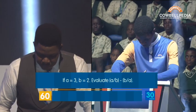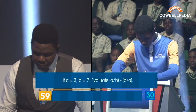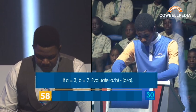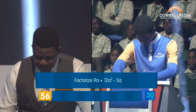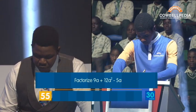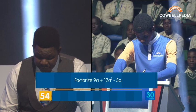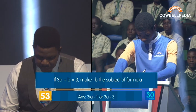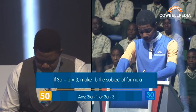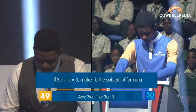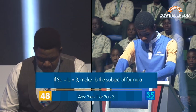If A is closer to 3 and B is closer to 2, evaluate A over B minus B over A. Skip. Factorize 9A plus 12A squared minus 5A. If 3A plus B equals 3, make minus B the subject — 3A minus 3. Answer: 3 into bracket A minus 1. Correct.